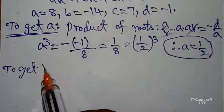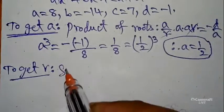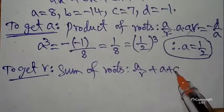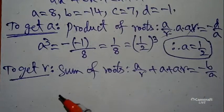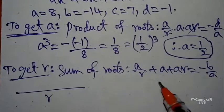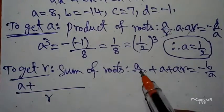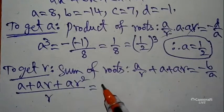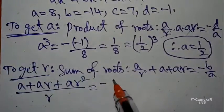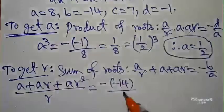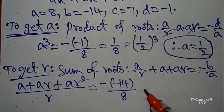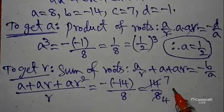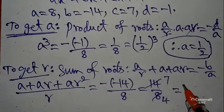To find R, we use the sum of the roots: a/r + a + ar = −B/A. Here −B/A = −(−14)/8 = 14/8 = 7/4. So the sum of the roots equals 7/4.